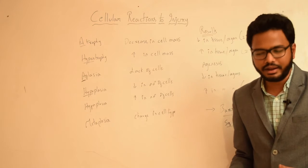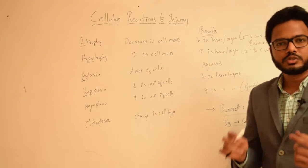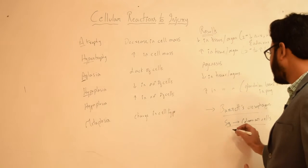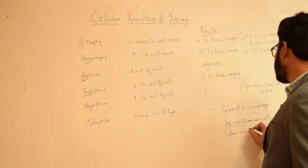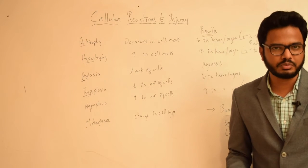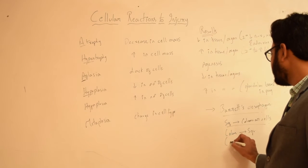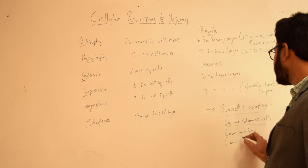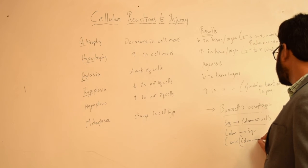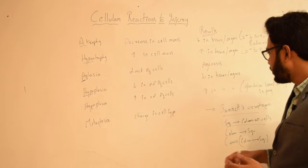Another example of metaplasia is in the respiratory tract of chronic smokers, where there is transformation of pseudostratified ciliated columnar epithelium to squamous epithelium. Additionally, in the cervix, columnar cells transform to squamous cells when the pH of the vagina is very low. These are some examples where we find metaplasia.